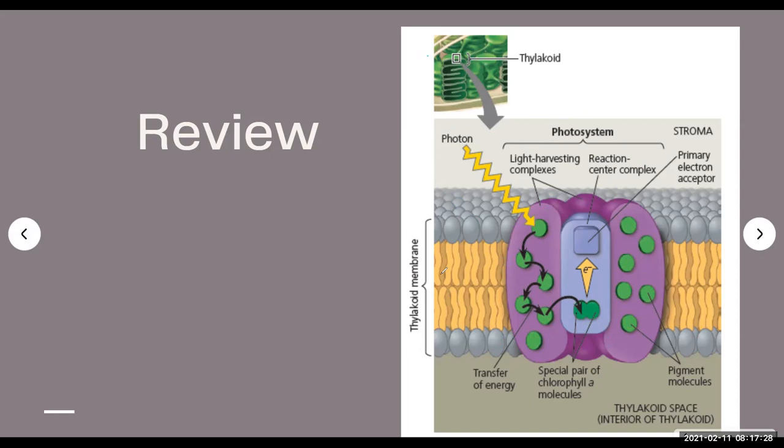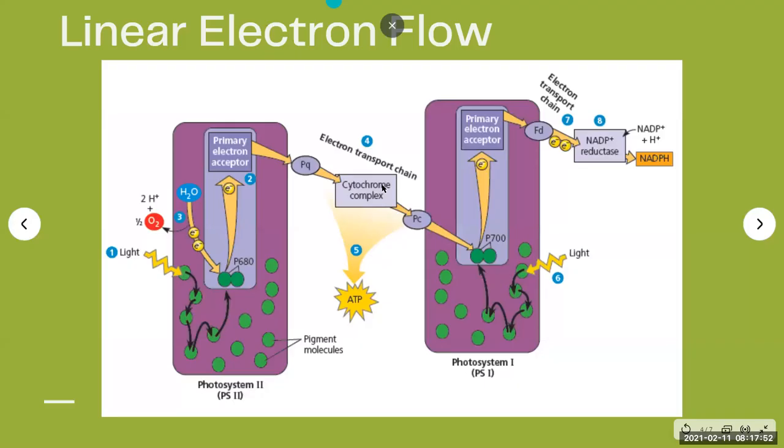The photosystem is found in the thylakoid membrane. Do you remember what the thylakoid is? It's the pancake-like structure in the chloroplast — one unit of that stack is called a thylakoid.